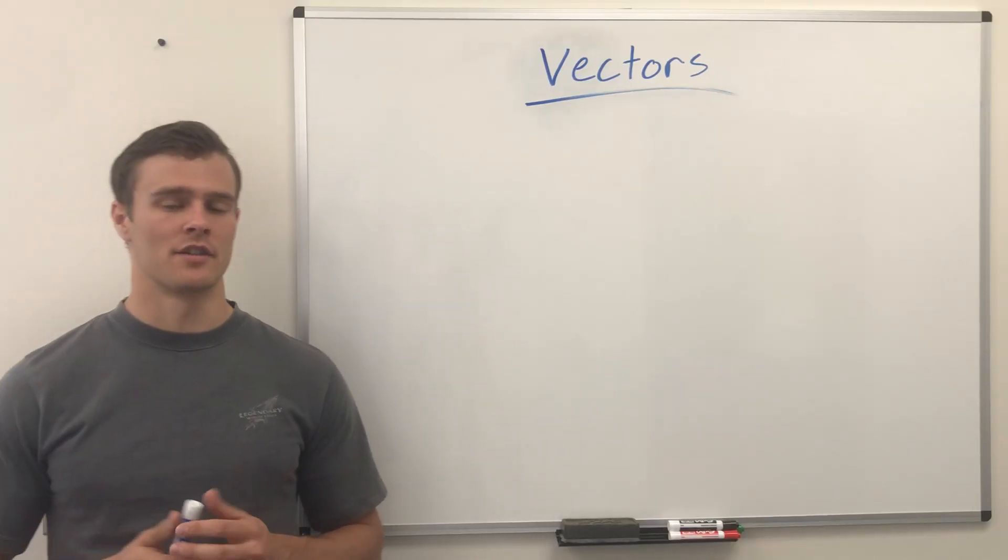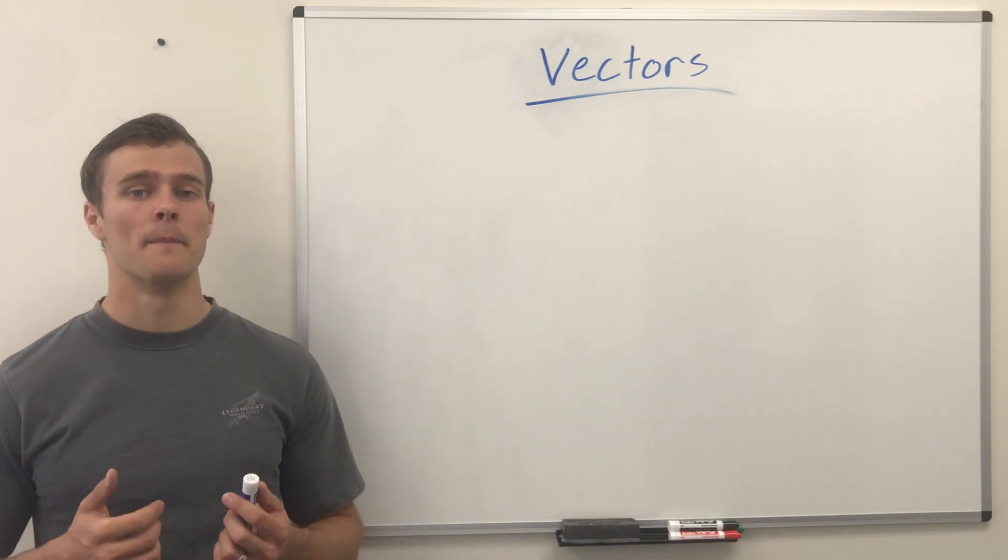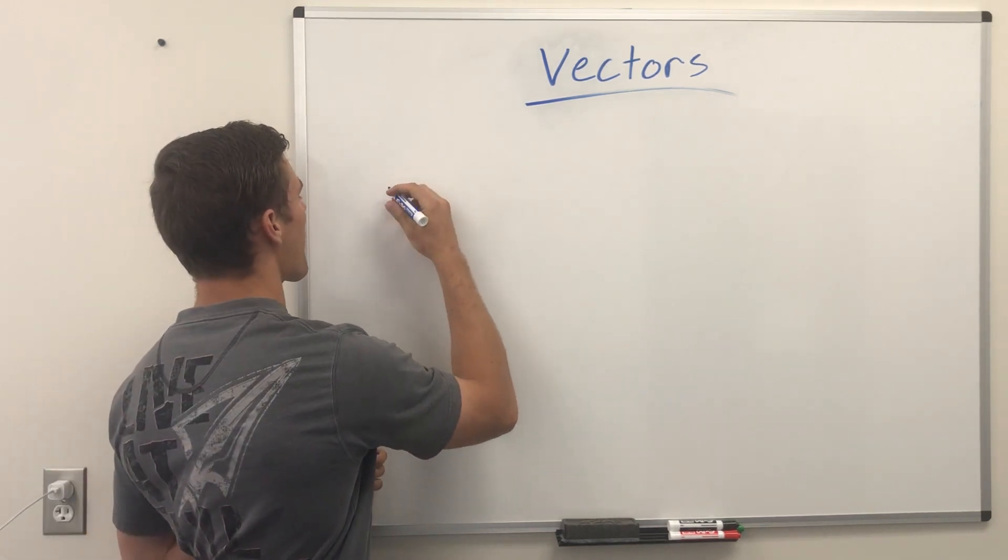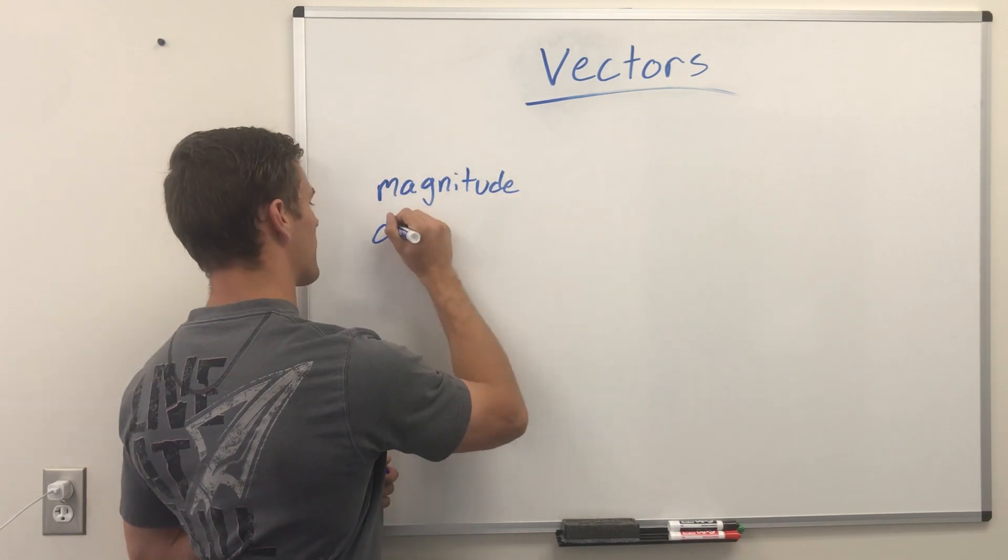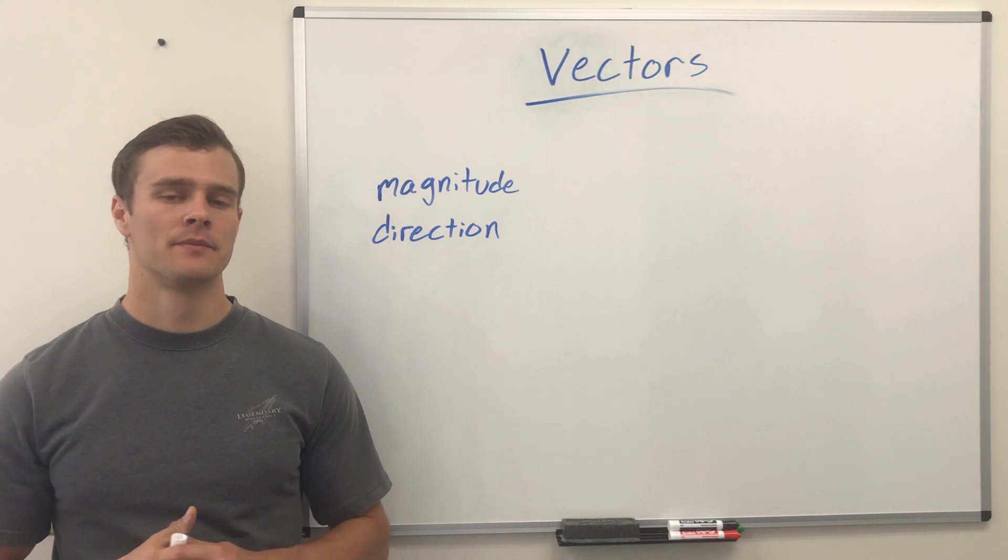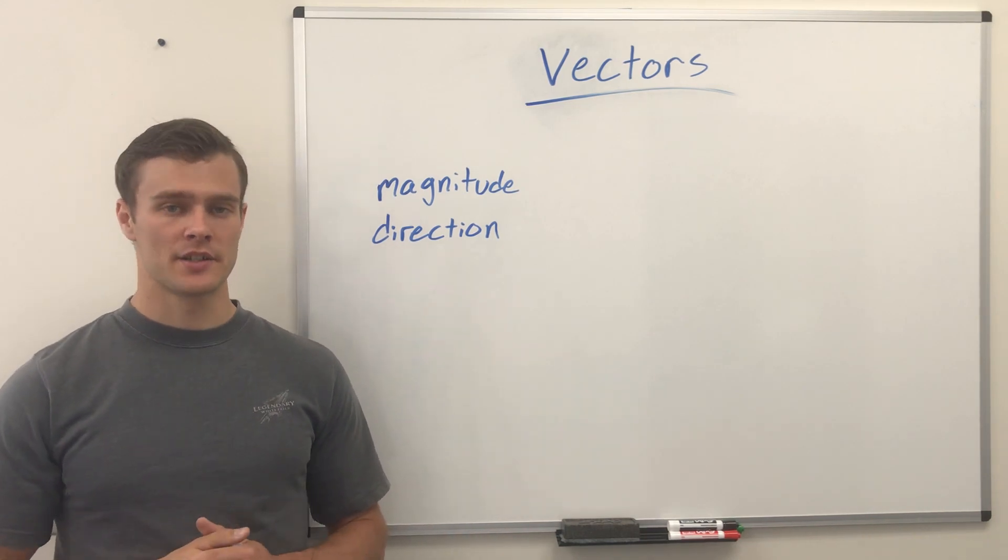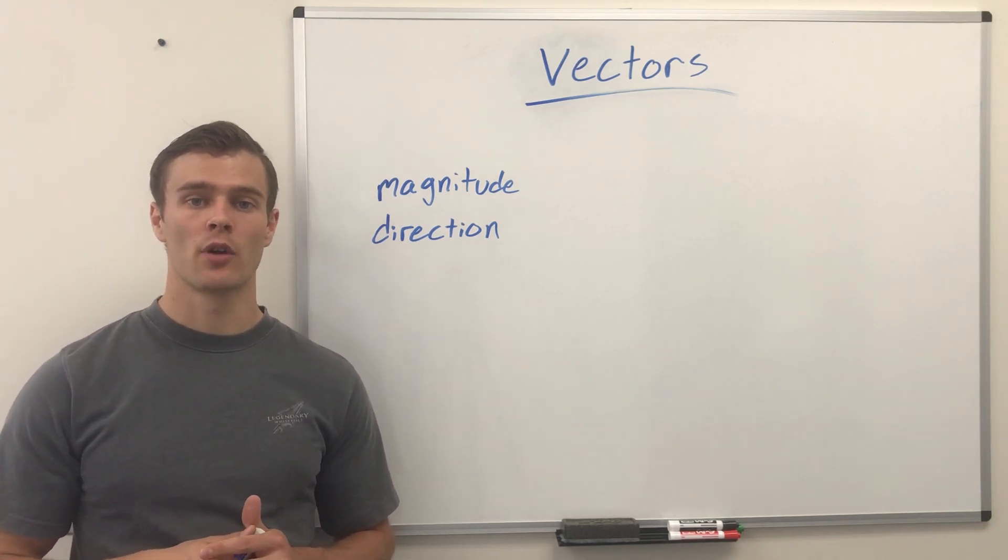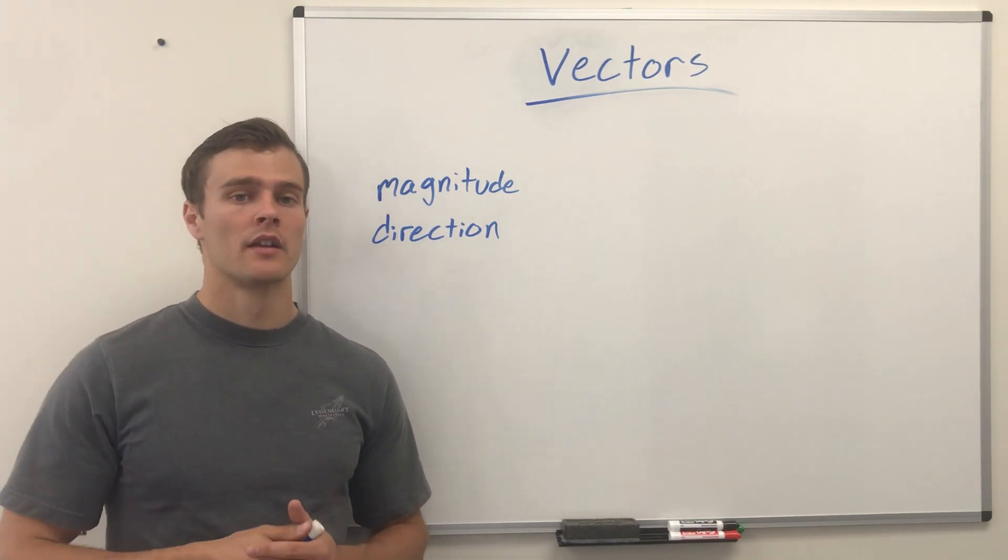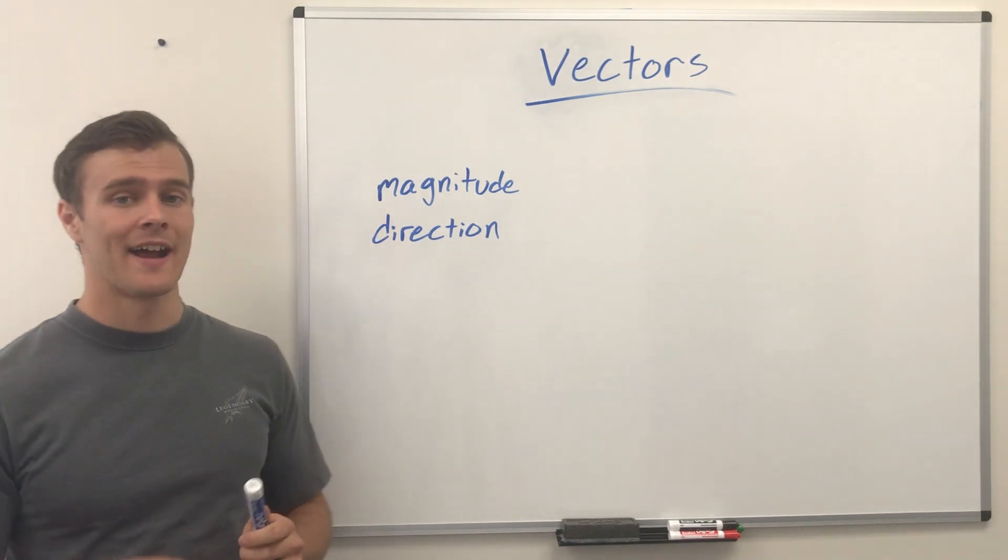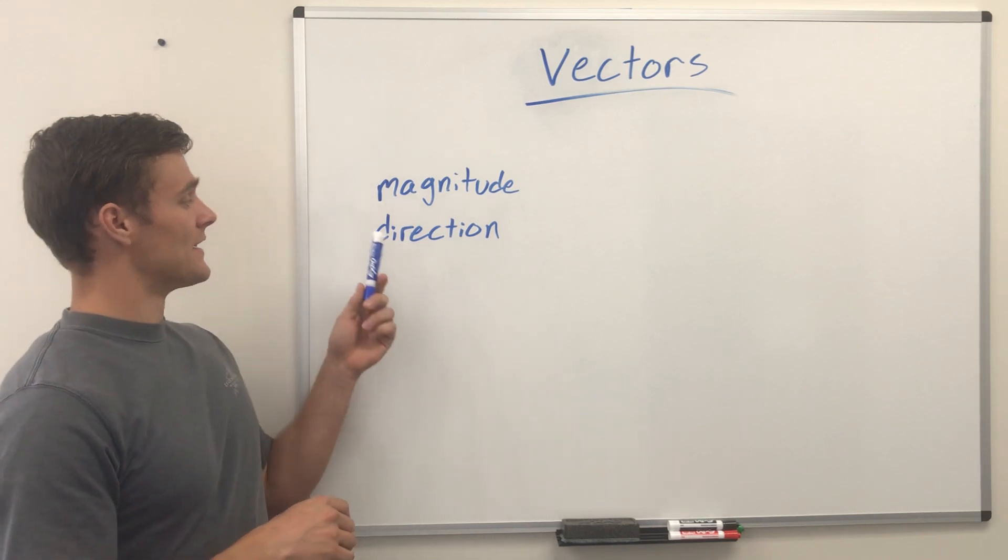A vector is a quantity with both a magnitude and a direction. As an example, say you're giving directions to someone as to how to get to the post office. You wouldn't just say it's four blocks. You'd say it's four blocks that way. So, four blocks is the magnitude and that way is the direction.